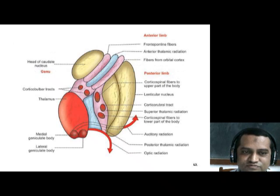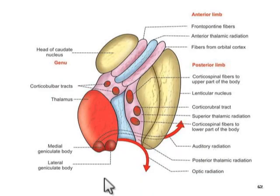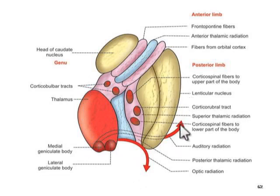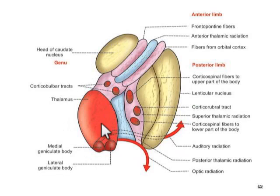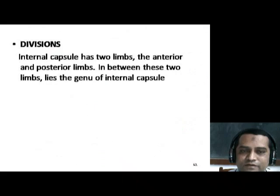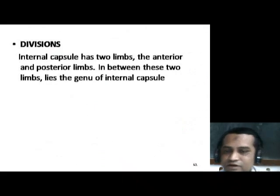The anterior limb of the internal capsule is short and it lies between the lenticular nucleus and the caudate nucleus. The posterior limb is long and it is situated between the thalamus and the lenticular nucleus.